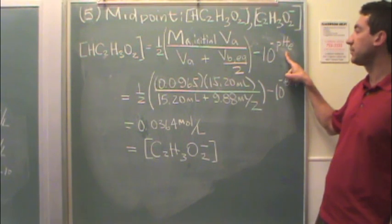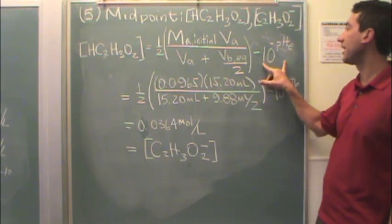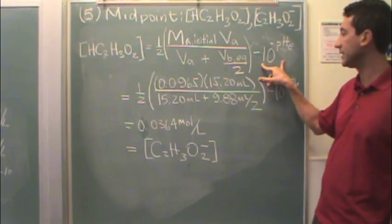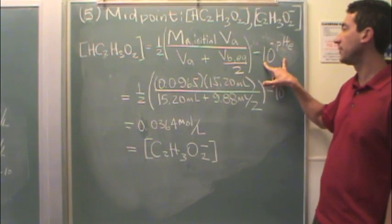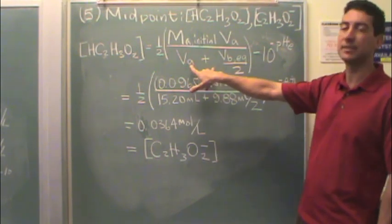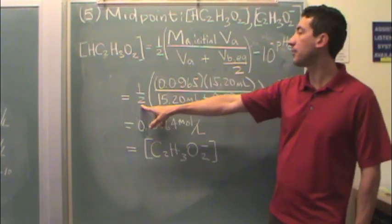And then that's minus 10 to the minus pH at the pulvin's point. You're going to find out this number is so small, it's really not going to make a difference, so it's basically going to be negligible compared to this number. So when you plug in the numbers at half...